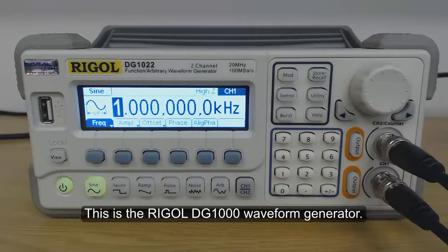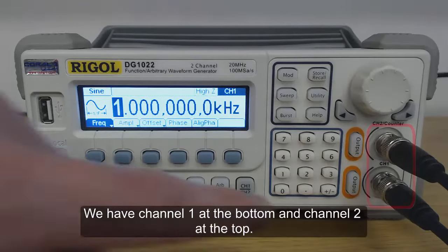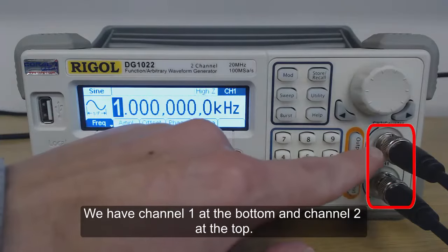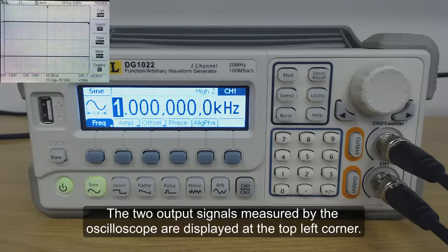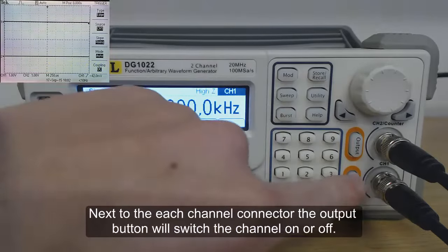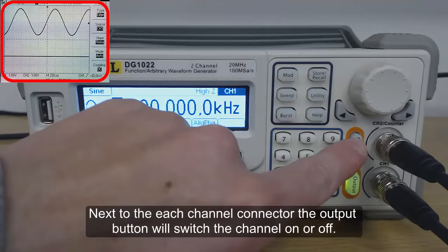This is the Regal DG1000 waveform generator. This model has dual channel output and both channels have the same features. We have channel 1 at the bottom and channel 2 at the top. The two output signals measured by the oscilloscope are displayed at the top left corner. Next to each channel connector, the output button will switch the channel on or off.